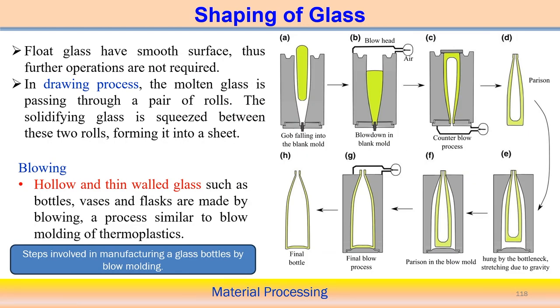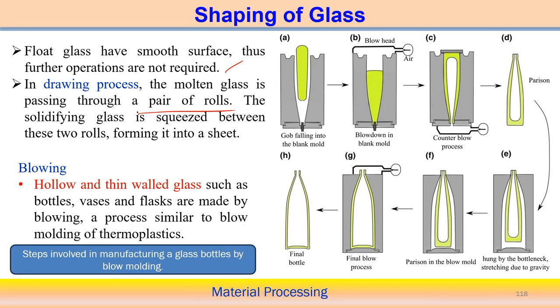Float glass has a very smooth surface, so further finishing operations are not required. However, in the drawing process — another process — the molten glass is passed through a pair of rollers. The solidifying glass is squeezed between the two rolls, similar to metal forming operations. In the drawing process, we can decide the thickness of the glass component we want to produce. This is one way we can produce a very flat shape of glass.